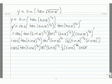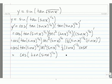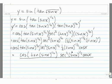Our last step is just to clean this up a little bit by bringing the sine of x to the 1 half down into the denominator, and dropping the 2 down into the denominator as well. So we get cosine of tangent of sine of x to the 1 half, times secant squared of sine of x to the 1 half, times cosine of x, all over 2 times the square root of sine of x.